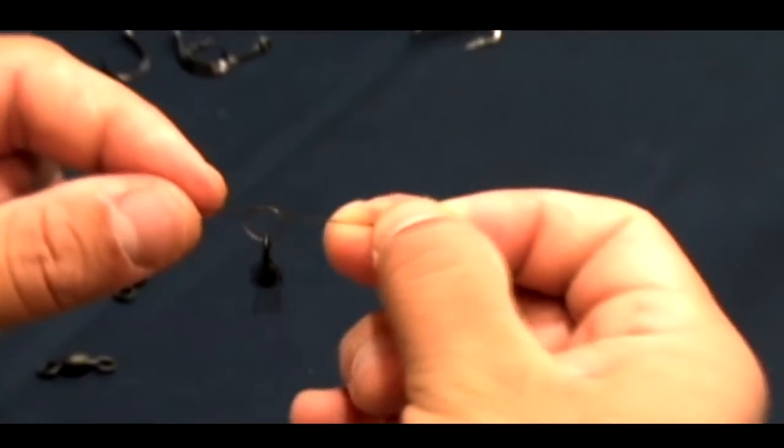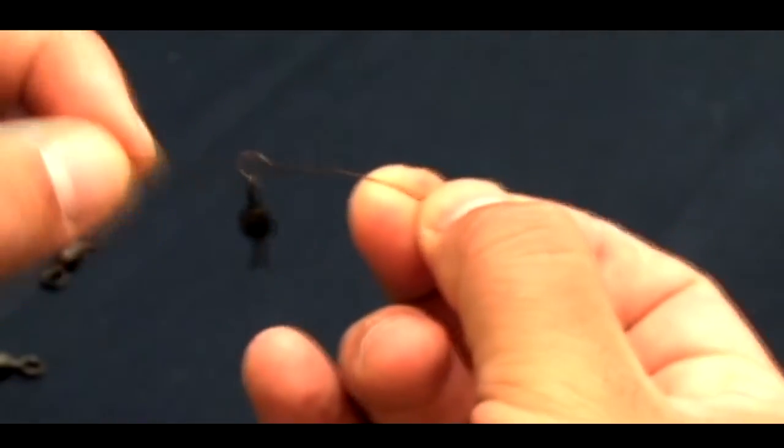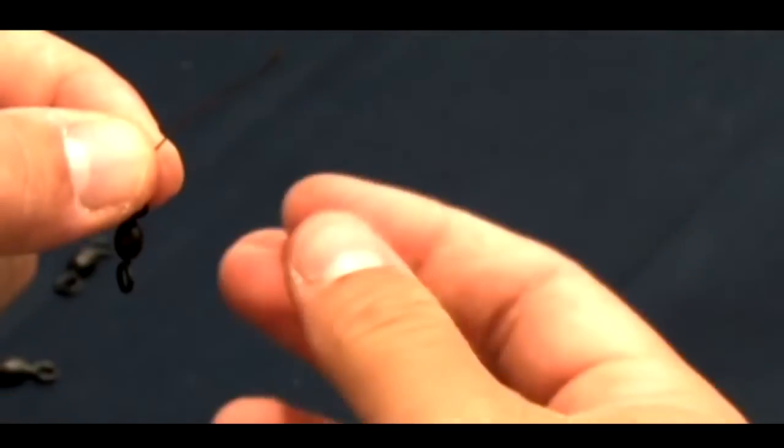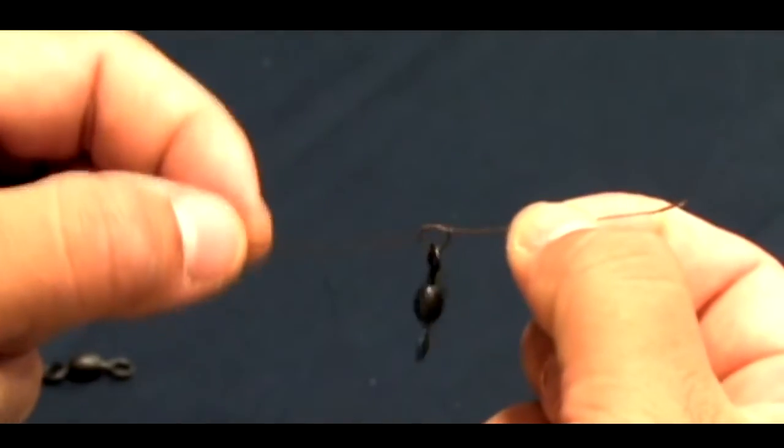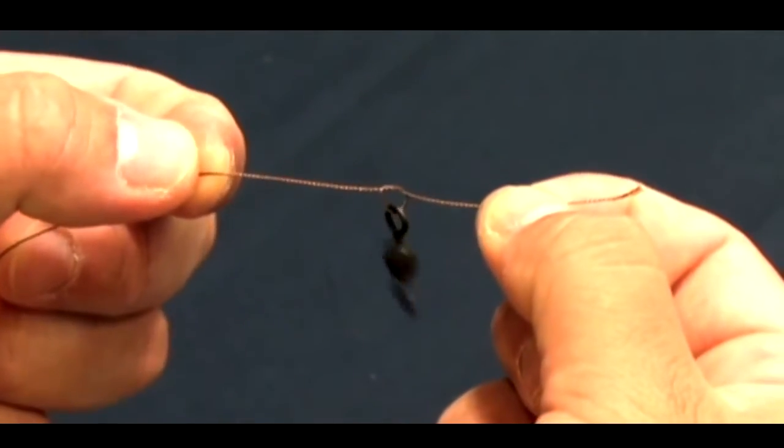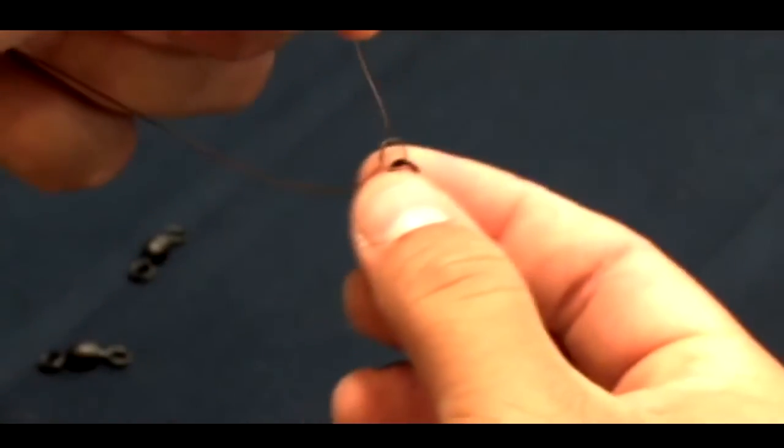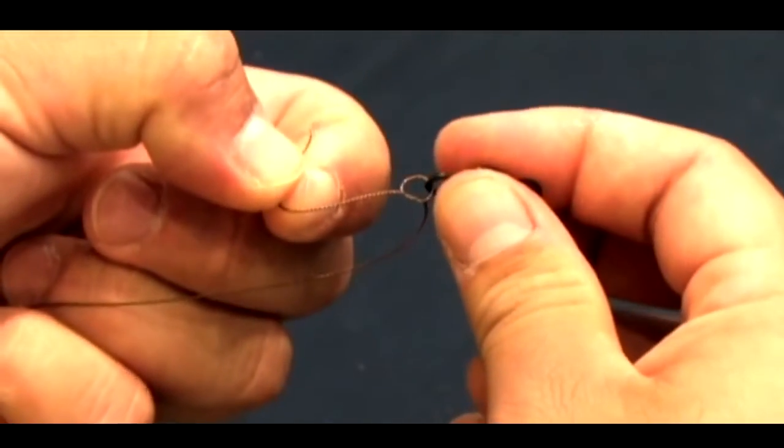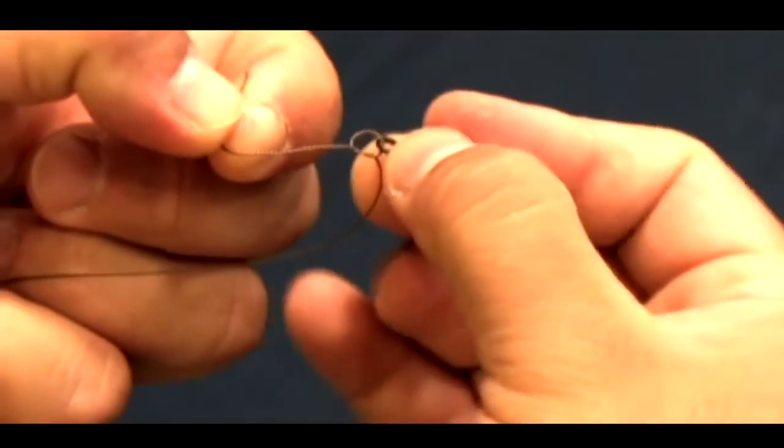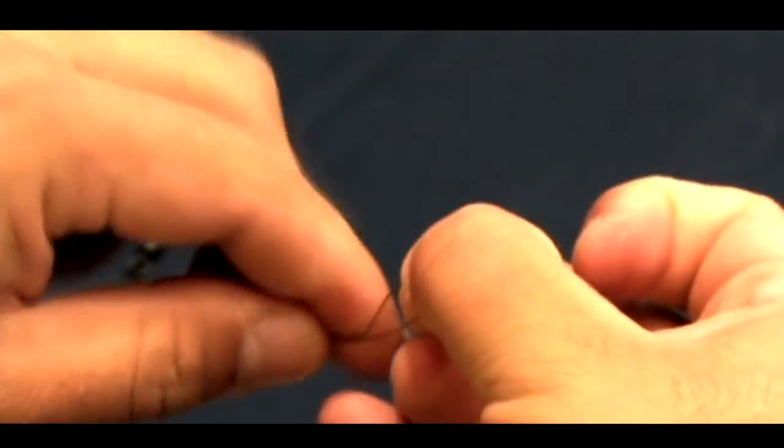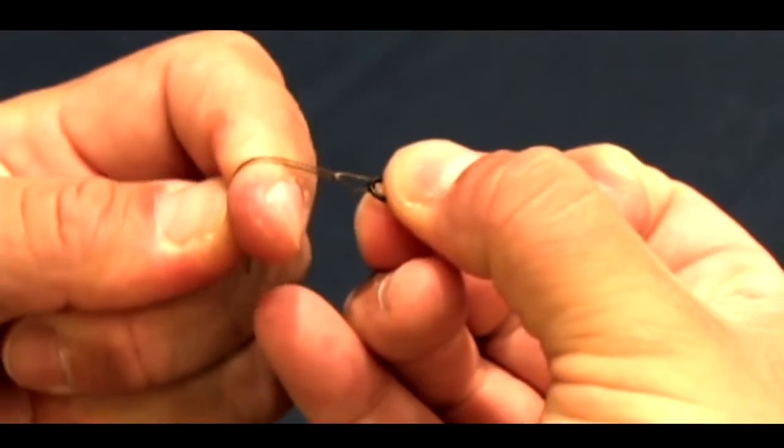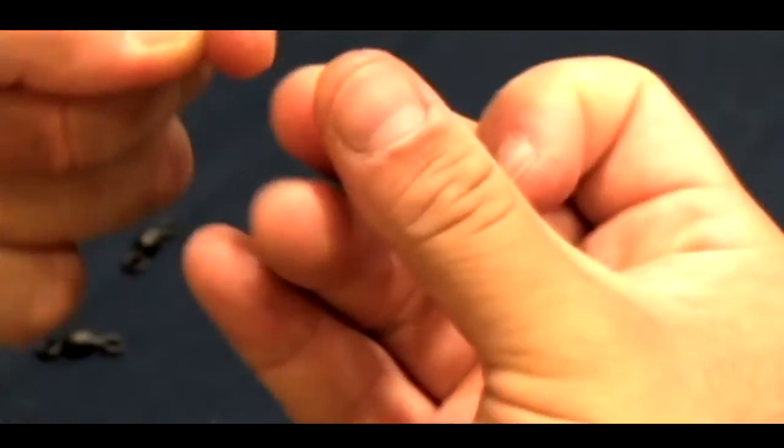Now here's the important part. Whenever you pull your tag end back towards your main line, you want to have the tag end farther down, and the reason why, this is going to create a lock in your knot, and it'll keep a loop open.